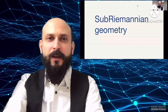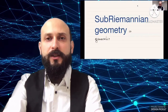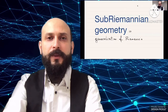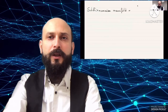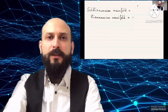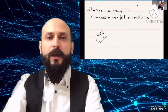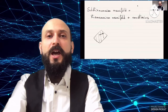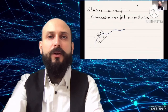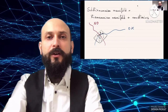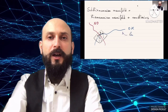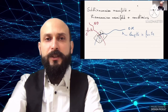Welcome to the course on Sub-Riemannian geometry. Sub-Riemannian geometry is a generalization of Riemannian geometry. Roughly speaking, a Sub-Riemannian manifold is a Riemannian manifold together with a constraint on admissible directions of movement. In Riemannian geometry, every smooth embedded curve has locally finite length. But in Sub-Riemannian geometry, if a curve fails to satisfy the constraint, then it has infinite length.